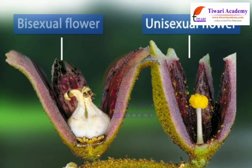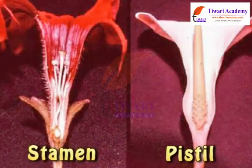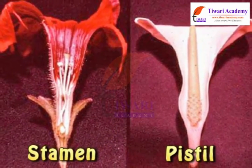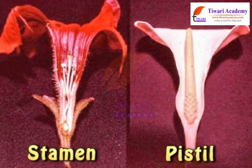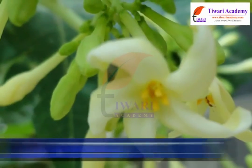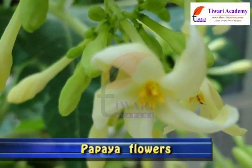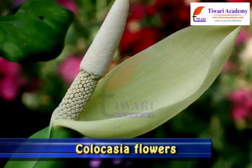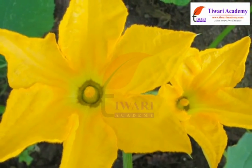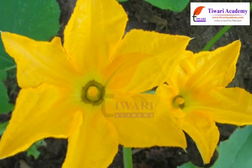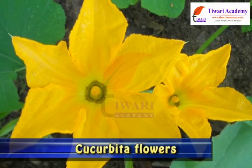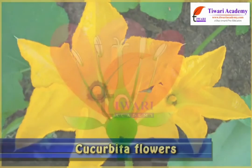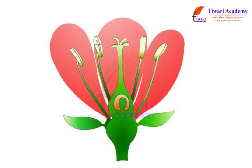Come, let us learn about the types of flowers. Flowers are unisexual when they have either stamen or pistil. Flowers are pistillate when they have only a pistil — examples are papaya and Cucurbitaceae. Flowers are staminate when they have only a stamen — for example, cucurbita. Bisexual flowers have both stamen and pistil.